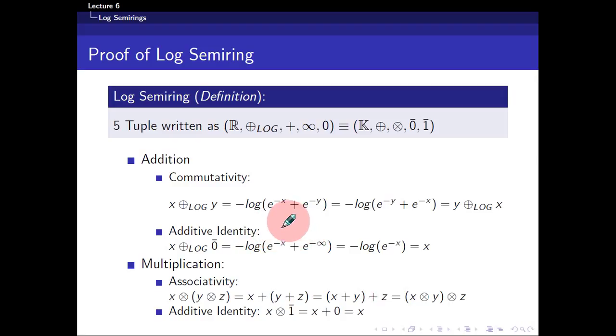So for commutativity, it's pretty straightforward. If you write everything out, x plus y is equal to this by definition. Well, I can flip this because there's a classical addition here. I can flip this, you get e to the power of minus y plus e to the power of minus x, and by definition, it's equals to y plus x. So I've shown that it's commutative.